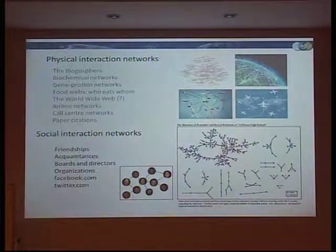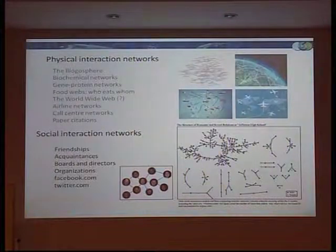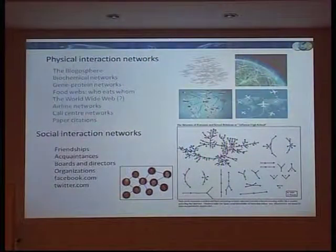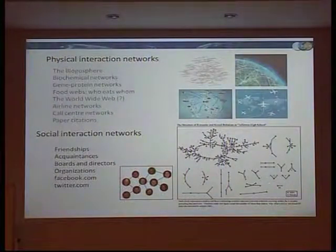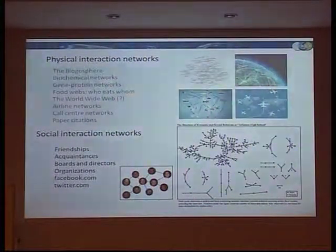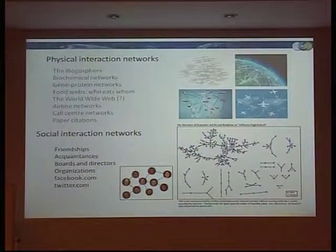I always like to show this one — it's a social network of Jefferson High School. They followed the students around for a year. The pink ones are the girls and the blue ones are the boys, and this is their sexual interactions in that high school over a year. As you can see, they're all connected in this big group. There are a lot of monogamous relationships — 63 monogamous relationships in this network — but also people who are monogamous whose partners aren't necessarily monogamous.